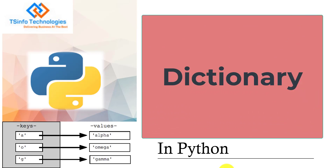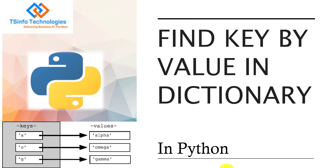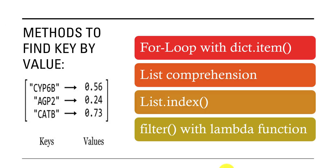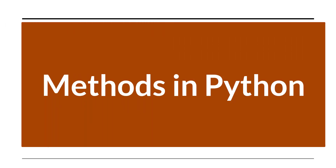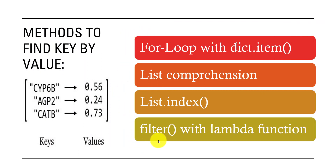A dictionary is a built-in data type in Python that holds multiple key-value pairs inside it. Accessing data from a dictionary with the help of keys is very simple, but in this case we are trying to get a key by value. Python provides many different methods to find key by value in a dictionary.